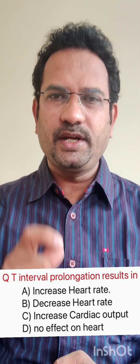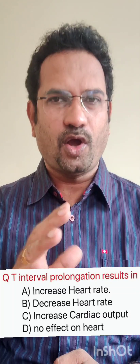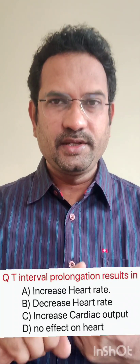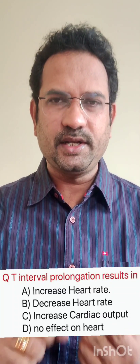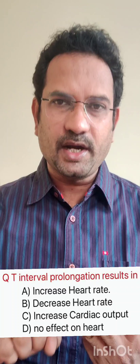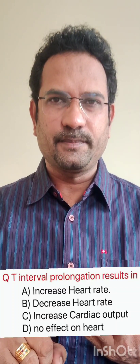The first question is: QT interval prolongation results in. Options are: increased heart rate, decreased heart rate, increased cardiac output, no effect on the heart.